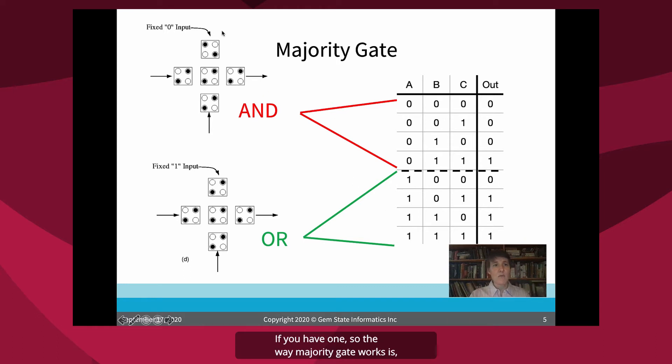If you have one, so the way majority gate works is the output is the majority of the input. So if you have two zeros, two or more zeros, the output is zero. If you have two or more ones, the output is one. And if you hold one of the inputs stable, so for instance, if you hold one of them at zero, then the other two inputs act as an AND gate. And if you hold it as a one, the fixed input is one, then it acts as an OR gate. So that's the basic device. You have an AND and an OR.